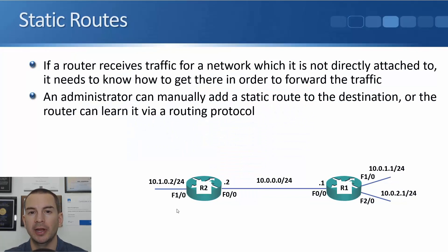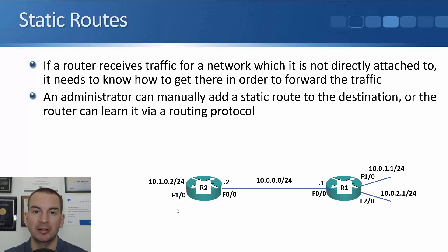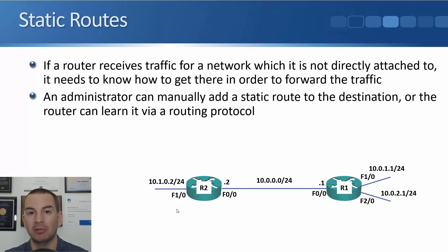In this lecture, you're going to learn about static routing. You saw in the last lecture that when you add an IP address to a router's interface, it automatically adds a connected route to its routing table and it's able to route traffic between its different connected interfaces. But if a router wants to send traffic to a subnet that it's not directly connected to, then it's going to need some way to know how to get there, so you need to get that route into the routing table. You can either do it manually as an administrator by adding a static route, or the router can learn it dynamically through a routing protocol. In this lecture, we're going to cover how to add it with a static route.